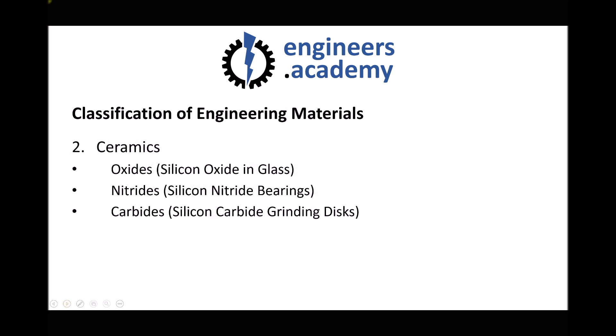Next we have ceramics, which are often classified as oxides, nitrides, and carbides. None of these are elements because they're all combinations of different materials, this time chemically bonded together.